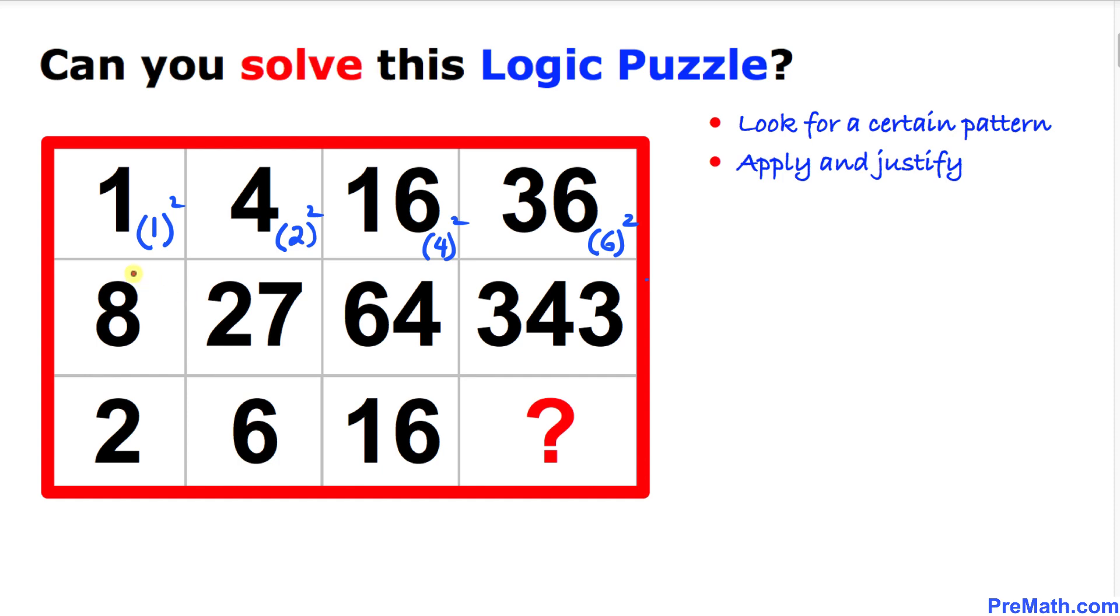Now let's focus on this middle row and we can see that these numbers represent perfect cubes. In other words, 8 could be written as 2 to the power 3, 27 could be written as 3 to the power 3, 64 could be written as 4 to the power 3, and finally 343 could be written as 7 to the power 3.